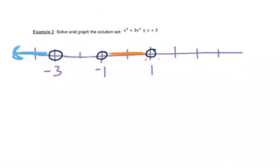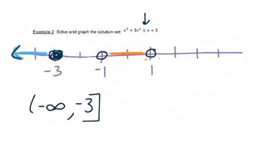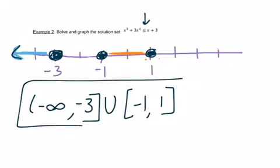Now that I've cleaned up my number line, I just need to write it in interval notation. The first thing I see is the arrow to the left, so that would be negative infinity, and then negative 3. When I put my dots on, I should have put in filled dots, because this has an equal sign below it, which would make it be a bracket. Then the next thing I get is negative 1, and then 1. So here is my final answer.